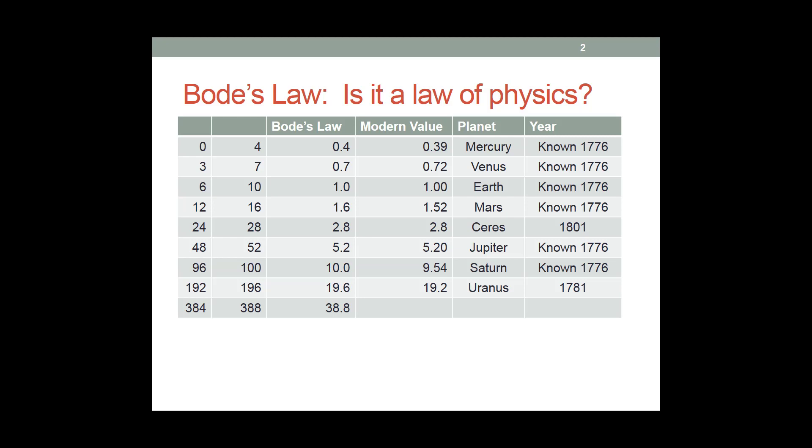Well, regrettably, Neptune, discovered in 1846, falls at a value of 30.1 astronomical units, which Bode's law does not predict at all.